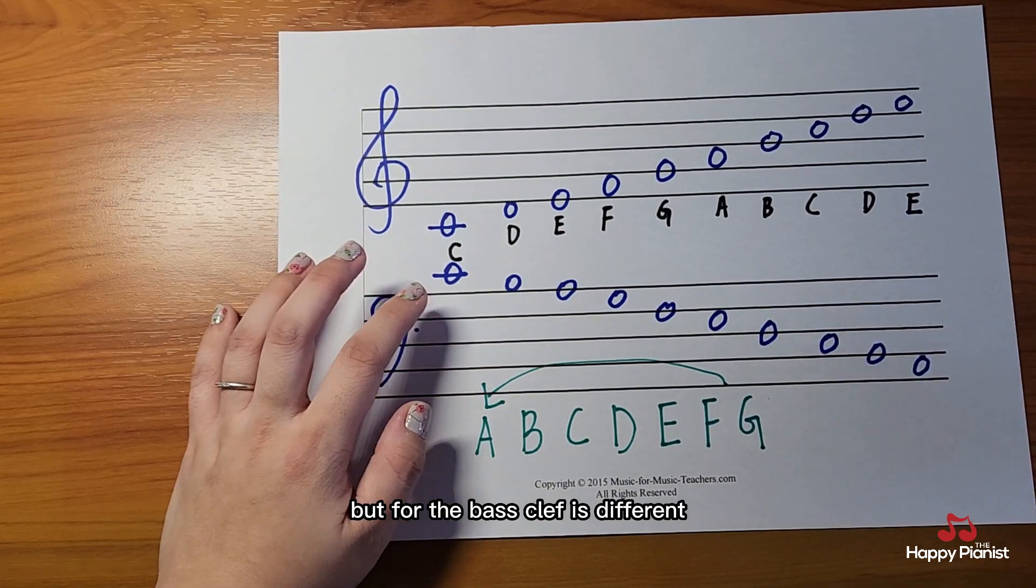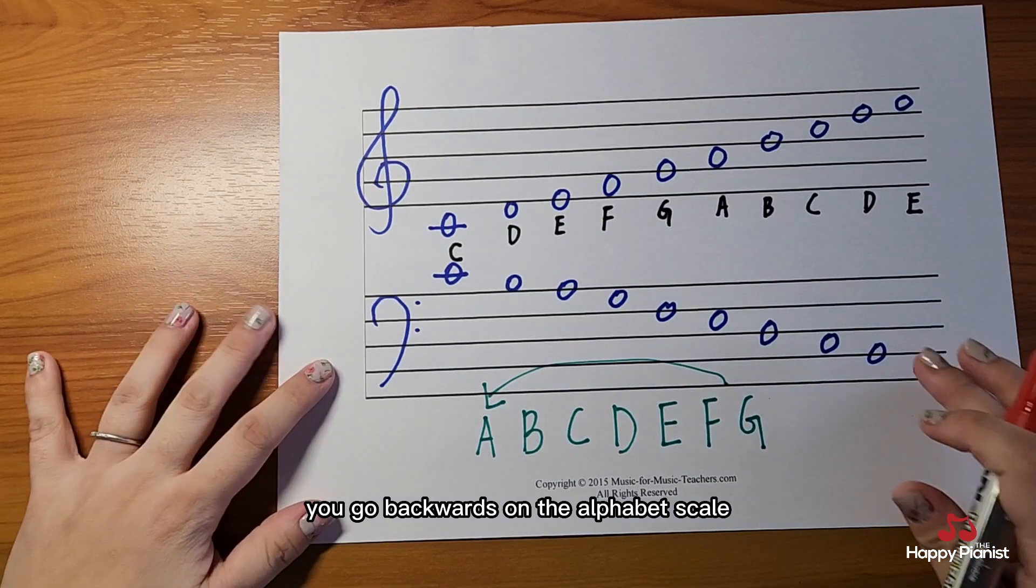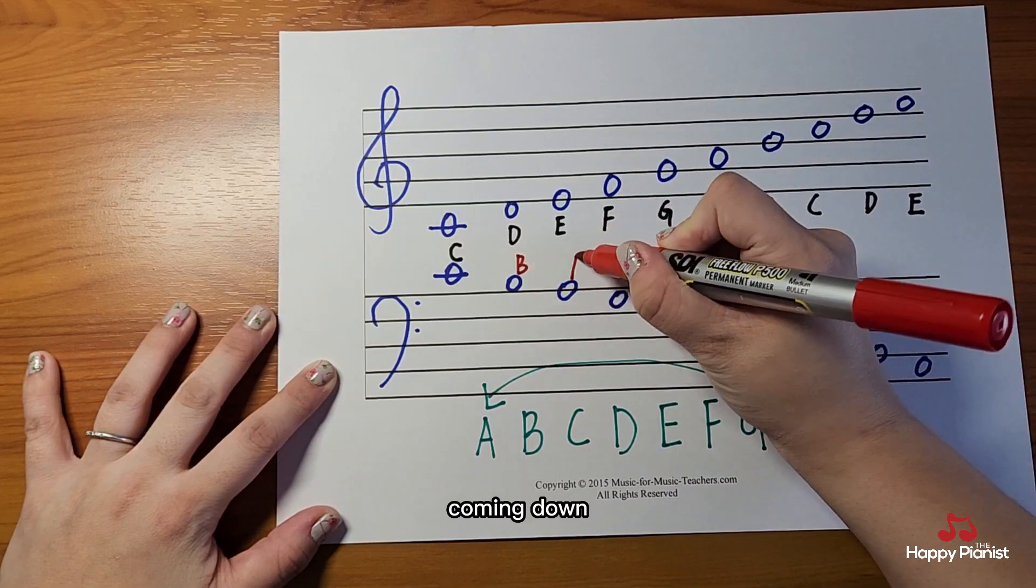But for the bass clef, it's different. Because it's coming down, you go backwards on the alphabet scale. So C, B, coming down, A.